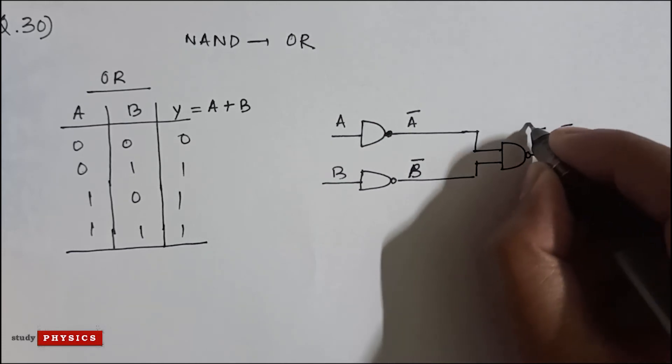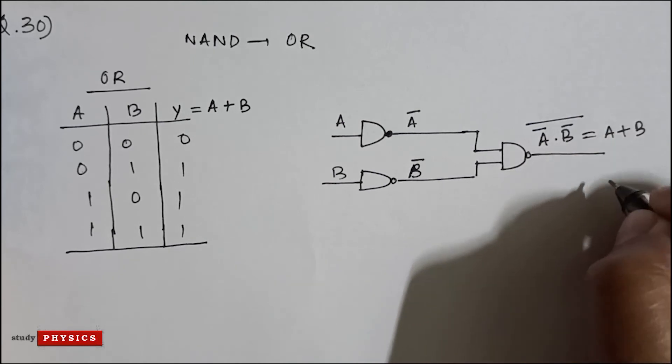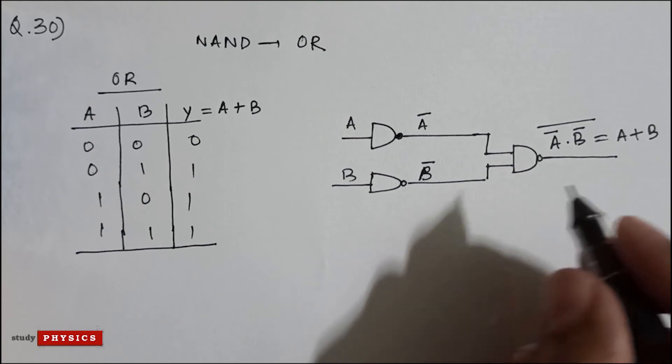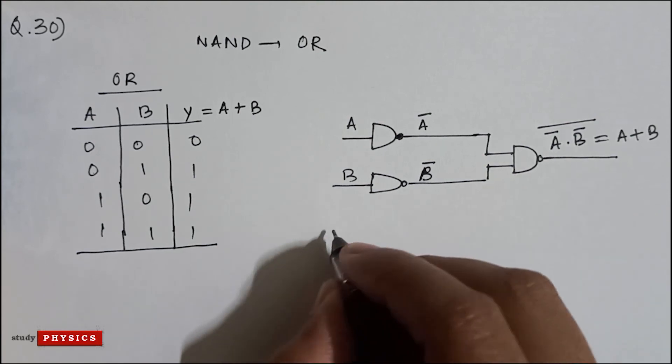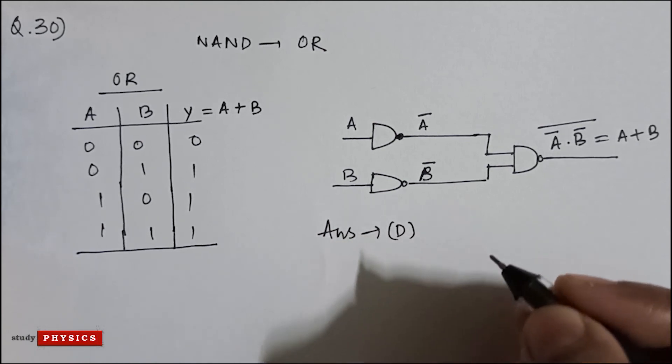B bar, this bar, which is A or B. So here we will need three NAND gates to construct an OR gate. So the correct answer is D: three NAND gates.